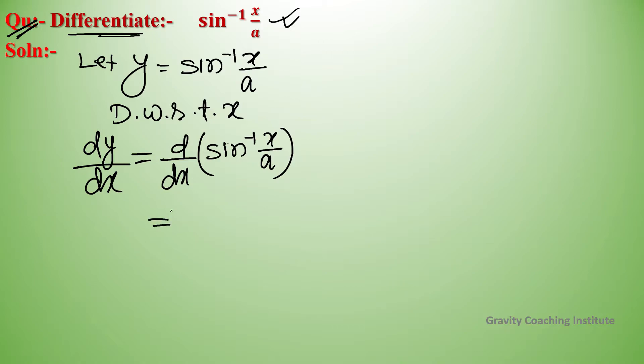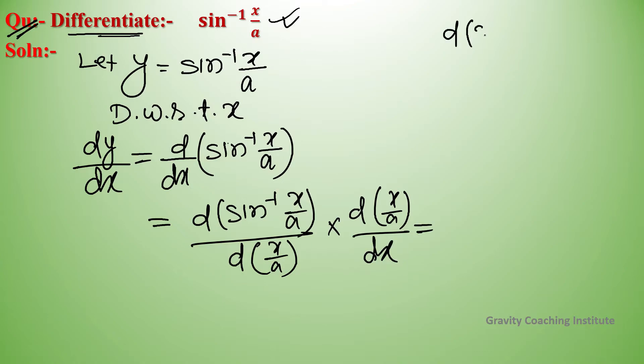We can directly apply the formula for sine inverse. According to the general rule, we can write sin^(-1)(x/a) divided by d(x/a) multiplied by d(x/a)/dx. So equal to, and we know that the differentiation of sin^(-1)(x) with respect to x equals